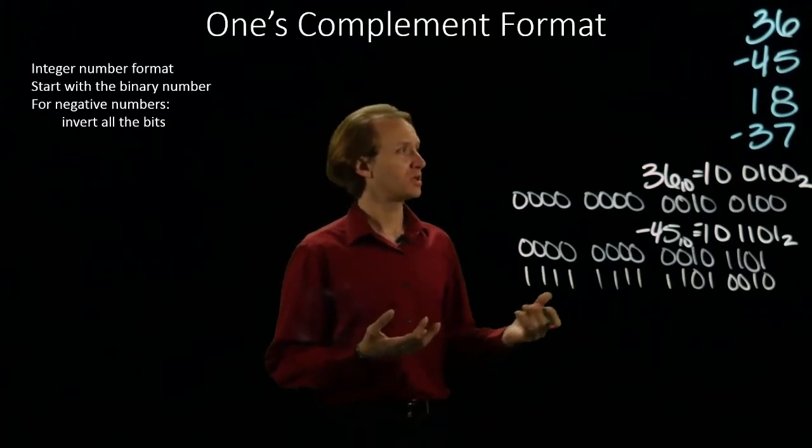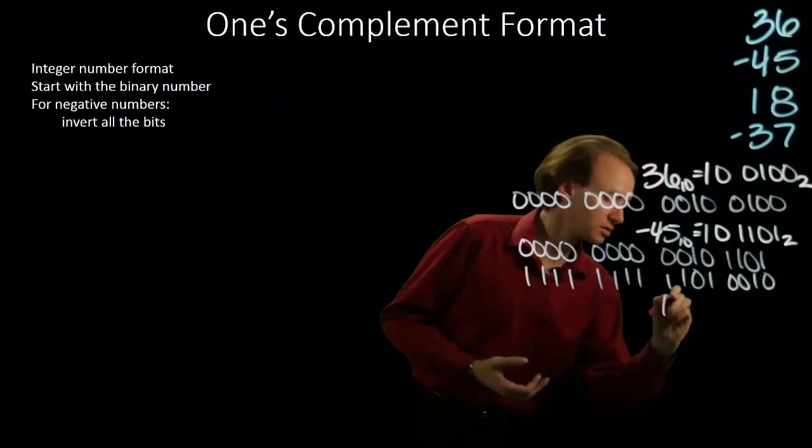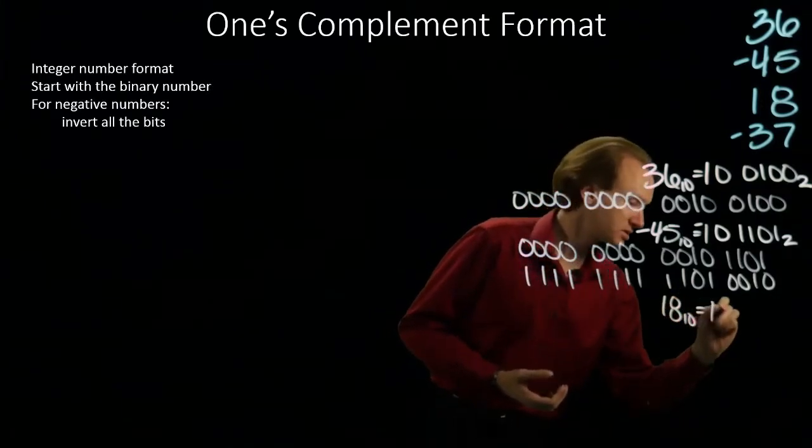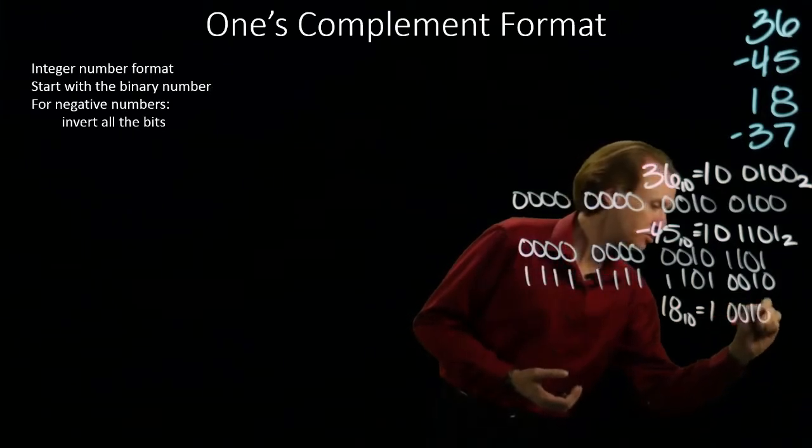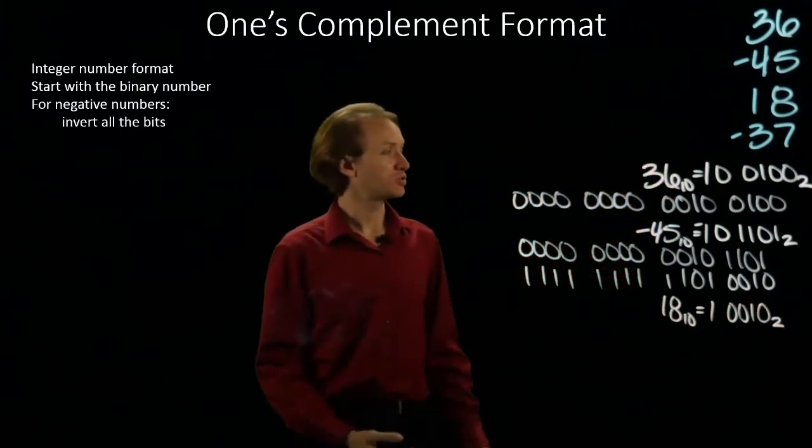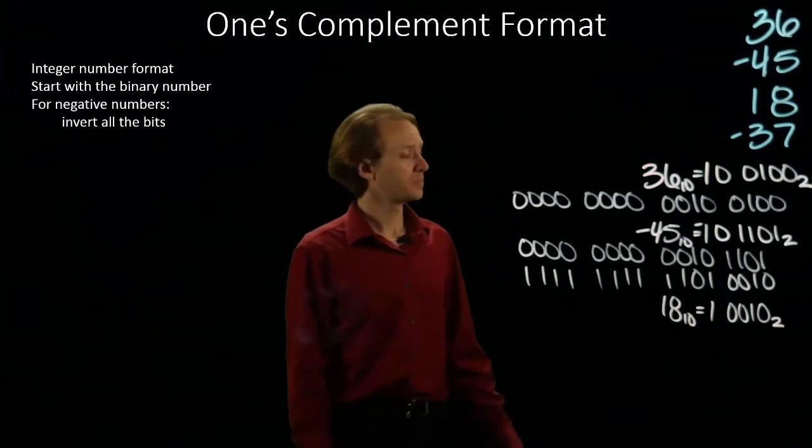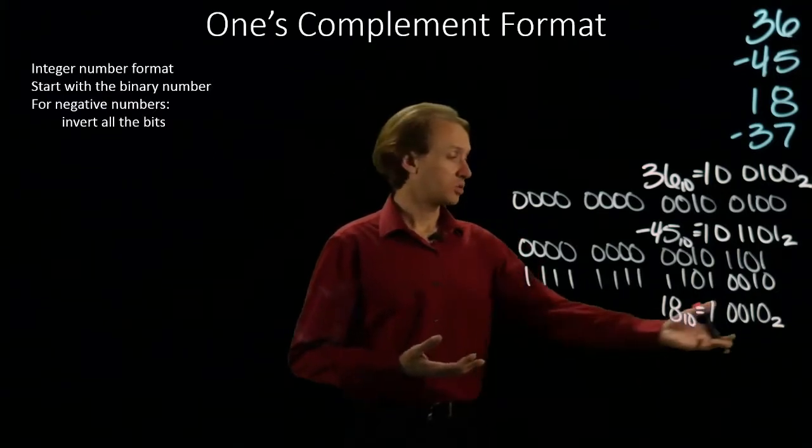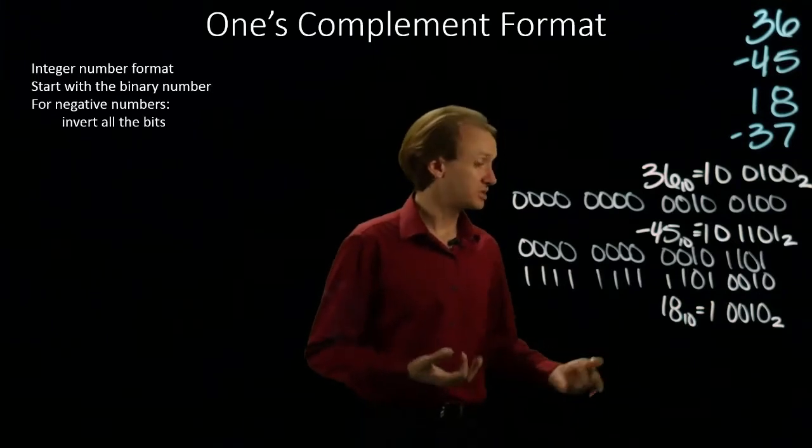The third example is 18. And that's 16 plus 2. So there's the binary representation of 18. For positive number, I'm just going to write down my number with 16 bits.